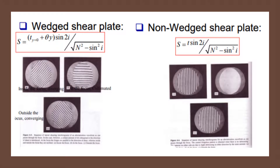In the previous lab, we used a shear plate to analyze and measure collimation, but shear plates are also useful to measure aberrations of optical elements. Shear plates can come with a wedge or without, and this distinction alters the interferograms present for each plate, as we will see later.